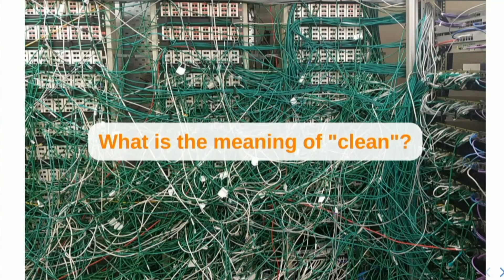Now that I've defined architecture and decided we need it, let me define 'clean.' I find it easy to define the opposite of clean — like that messy tangle in the background. If you look at that system, you can definitely say this is not clean. Good luck maintaining something like that — 'pull the green cable' — yeah, good luck. Sometimes our code looks like that: you change something and suddenly everything crashes.